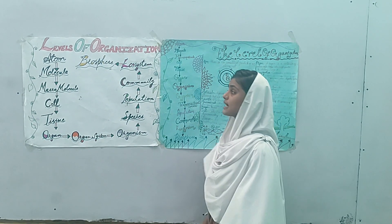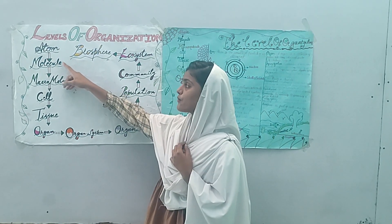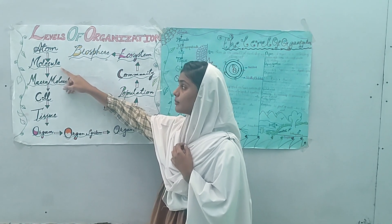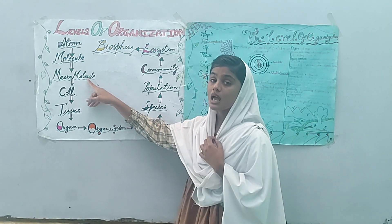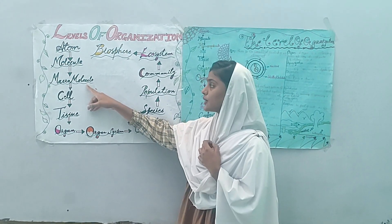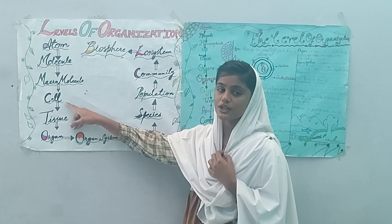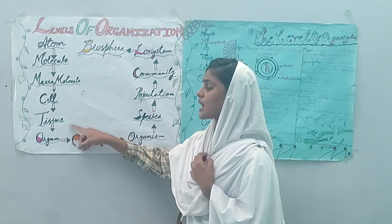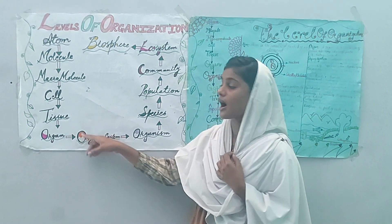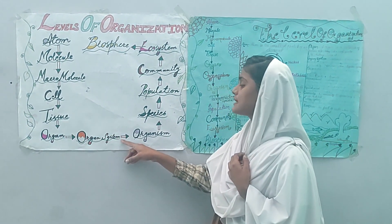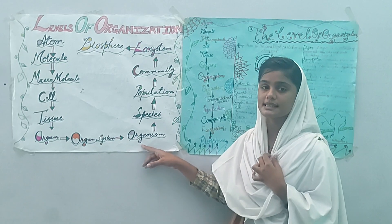The levels of organization start from atoms. Atoms combine to form molecules, molecules combine to form macromolecules, macromolecules combine to form cells, cells combine to form tissues, tissues combine to form organs, organs combine to form organ systems.